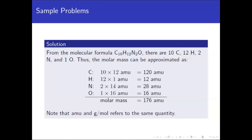The given atomic masses are decimal, but we can just approximate because the choices are not very close in terms of decimals. They are different in the ones and tens digits. So we don't really need the decimal — we just approximate the values as whole numbers.